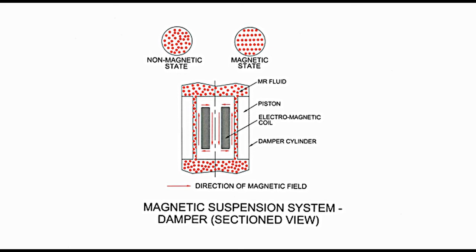On the left-hand side, the non-magnetic state is shown with fluid particles positioned haphazardly. With the formation of the magnetic field, the fluid attains the magnetic state shown on the right-hand side. Fluid particles are arranged symmetrically in the horizontal direction, which is transverse to the direction of fluid flow. This restricts fluid flow through the passage in the piston and the damping effect is achieved.